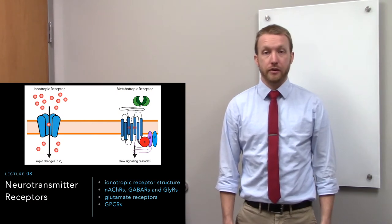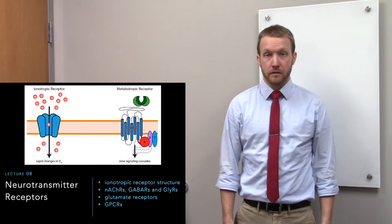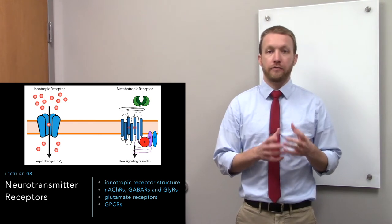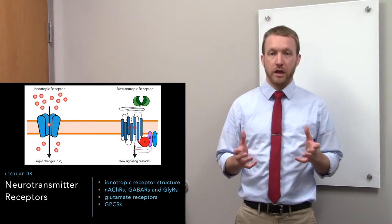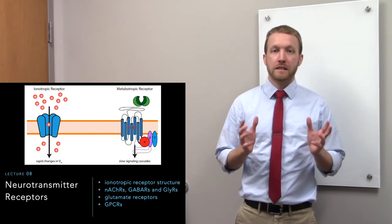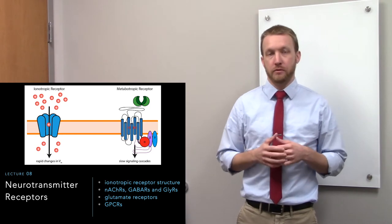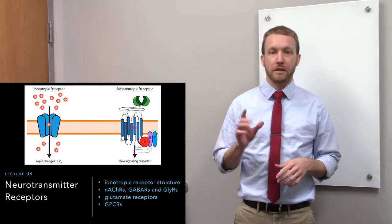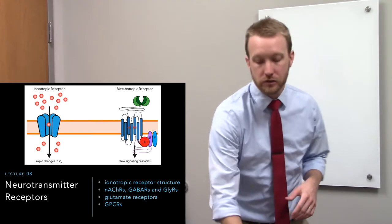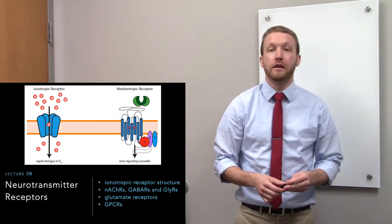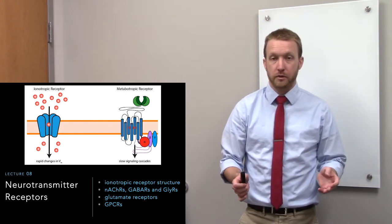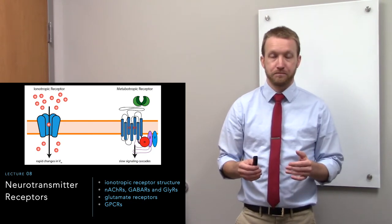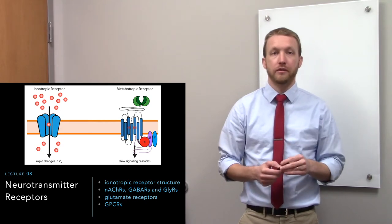Neurotransmitters exert their effects on target cells by binding to receptors. There are two broad classes of neurotransmitter receptors: ionotropic receptors, which create fast ion currents by directly opening a channel within the receptor itself, and metabotropic receptors, or G-protein coupled receptors. Ionotropic receptors will be the main focus today, while GPCRs will be introduced at the end and covered in more detail next lecture. These two classes create the fast and slow components of synaptic events.